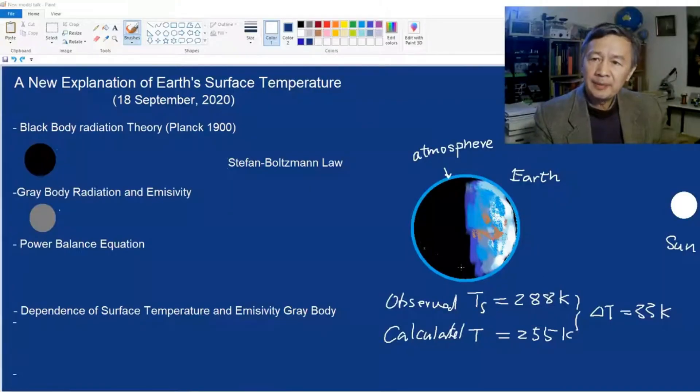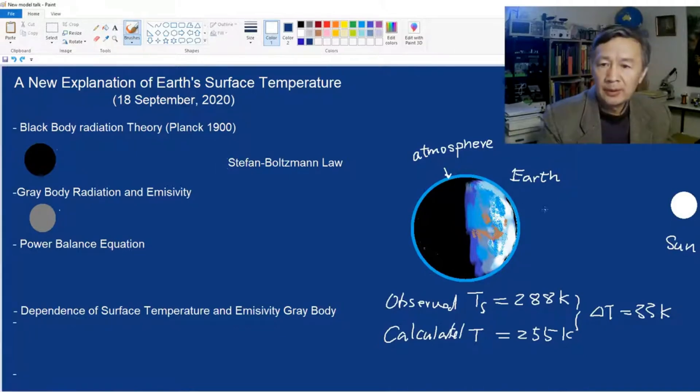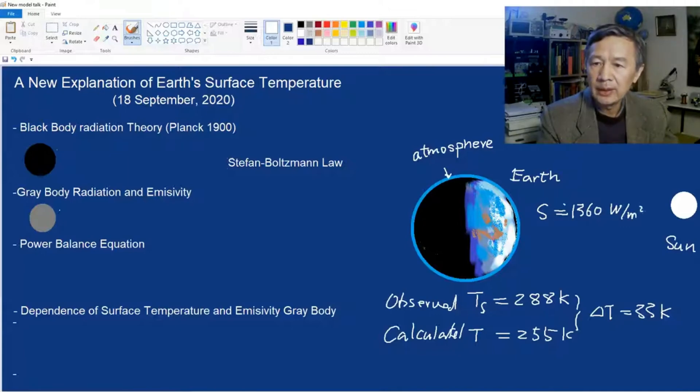Our Earth has been constantly illuminated and heated up by the Sun. So the solar constant was introduced to describe the intensity of the Sun, which is approximately 1360 watts per meter squared. That intensity is before they penetrate our atmosphere.